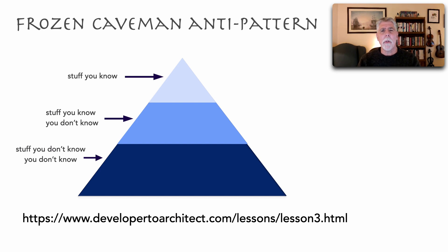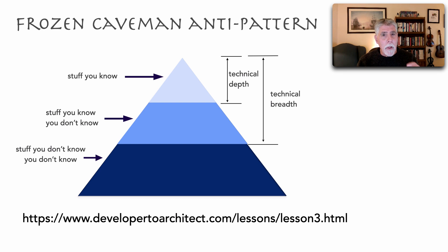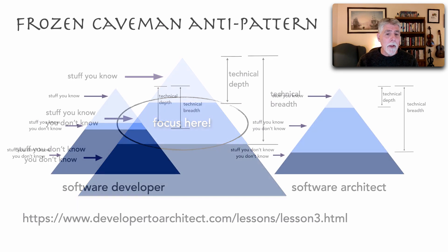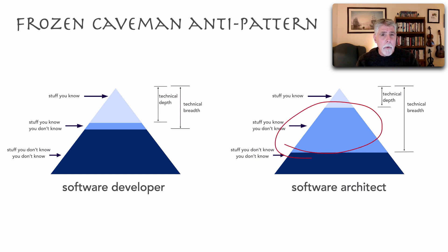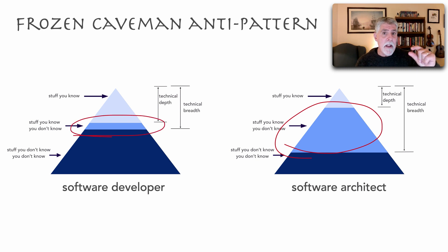In lesson three, I defined technical depth as the stuff you know, but technical breadth as the stuff you know plus the stuff you know you don't know. As an architect, that middle area is exactly where to focus. Looking at the triangle of knowledge differences between a software developer and a software architect, you can clearly see that increasing your technical breadth is how we avoid the Frozen Caveman anti-pattern and stay familiar with current trends, frameworks, technologies, and platforms — rather than being stuck in the past with a narrow technical breadth.